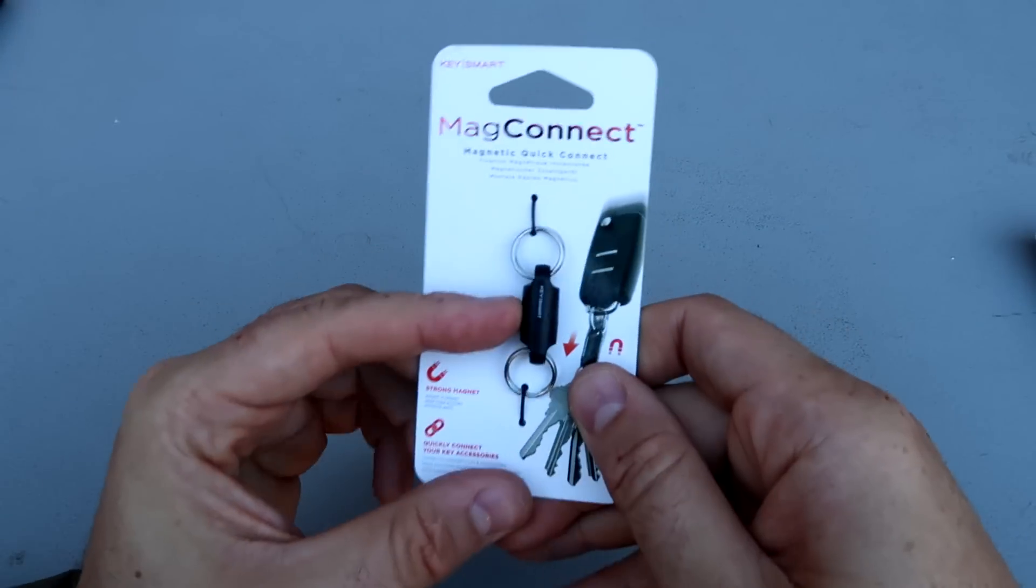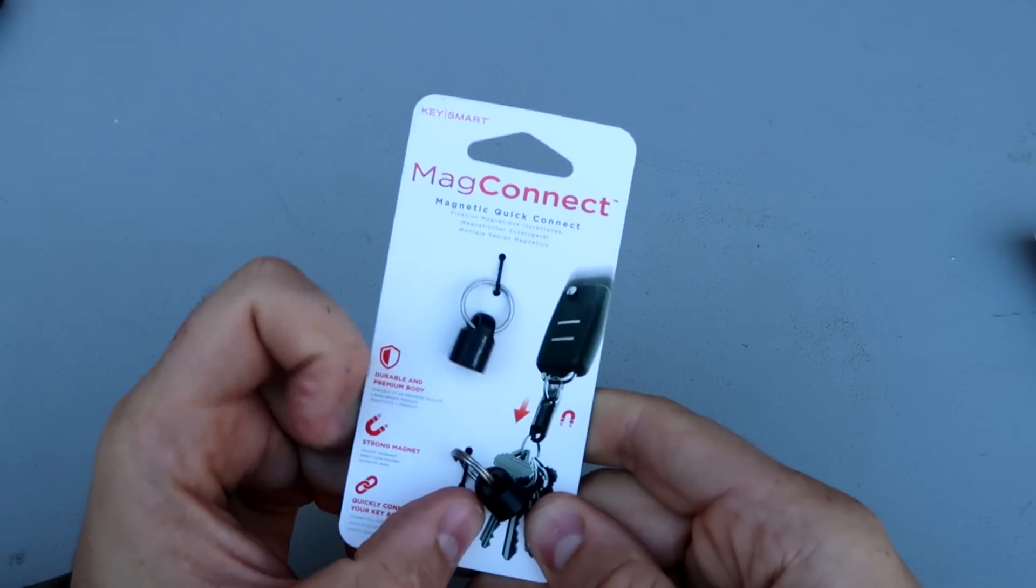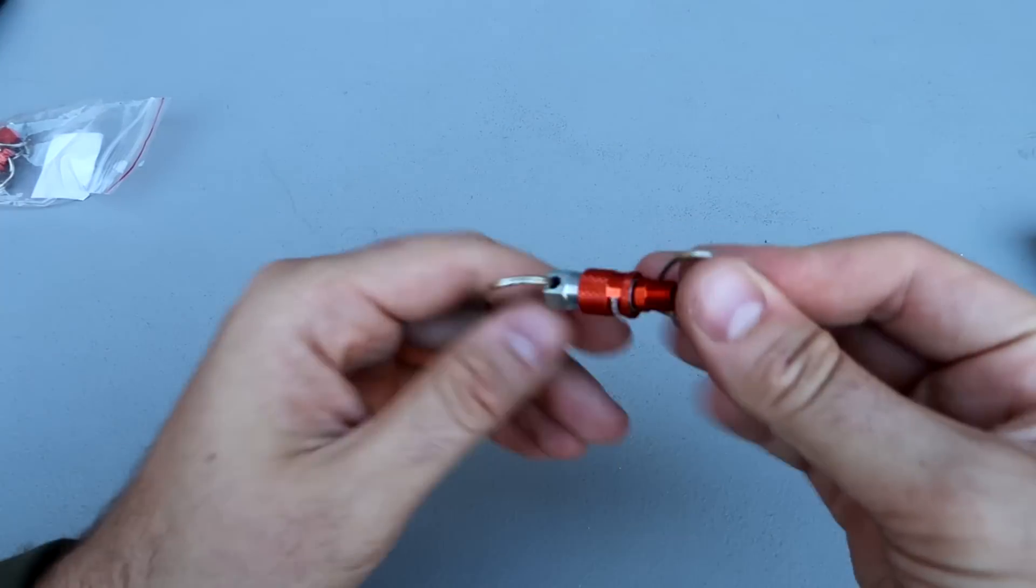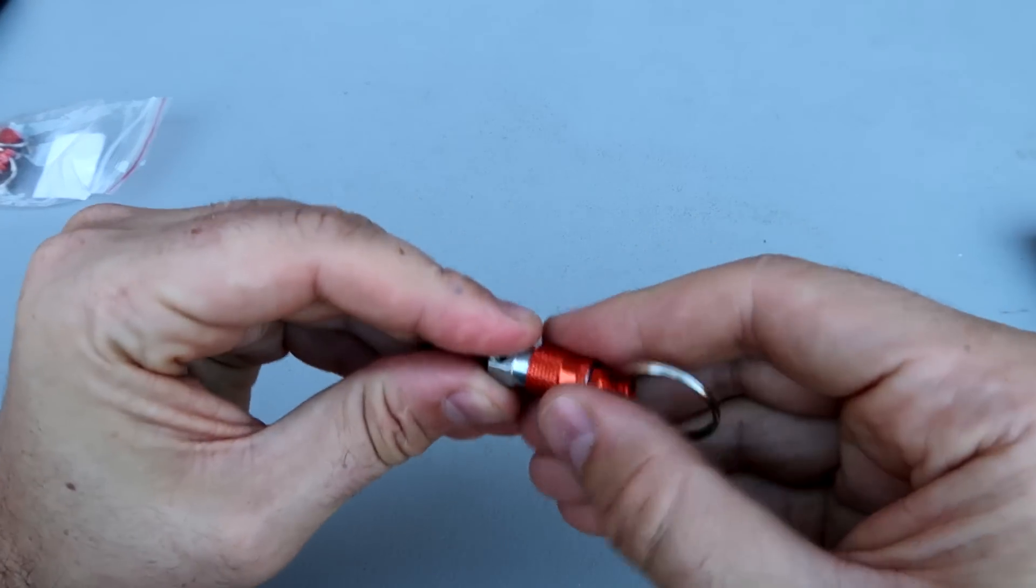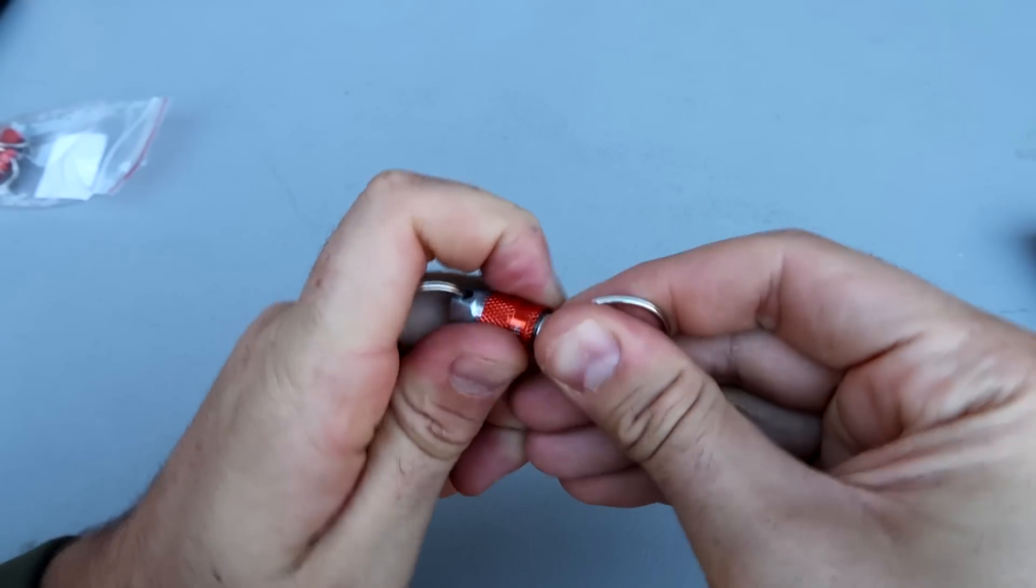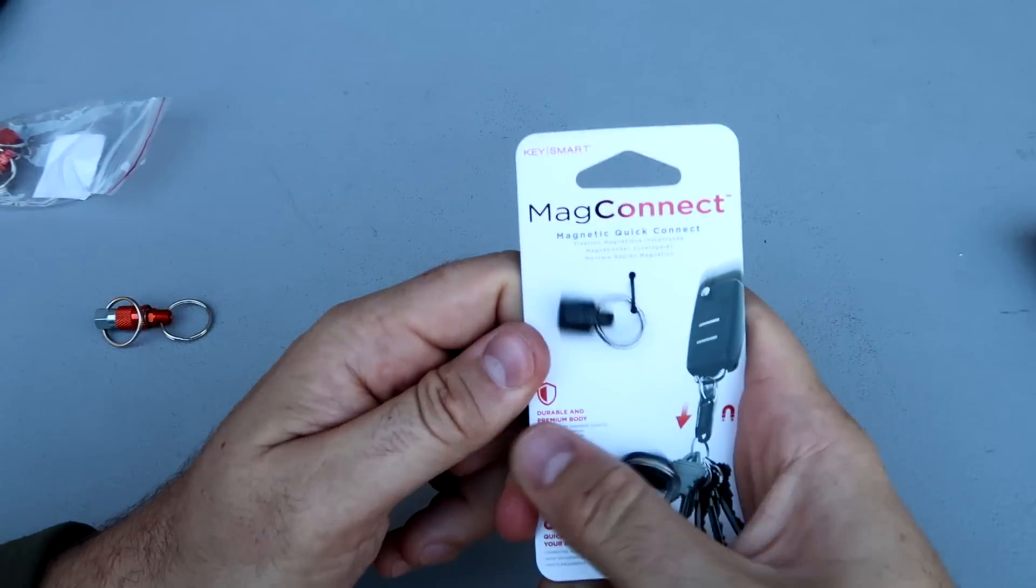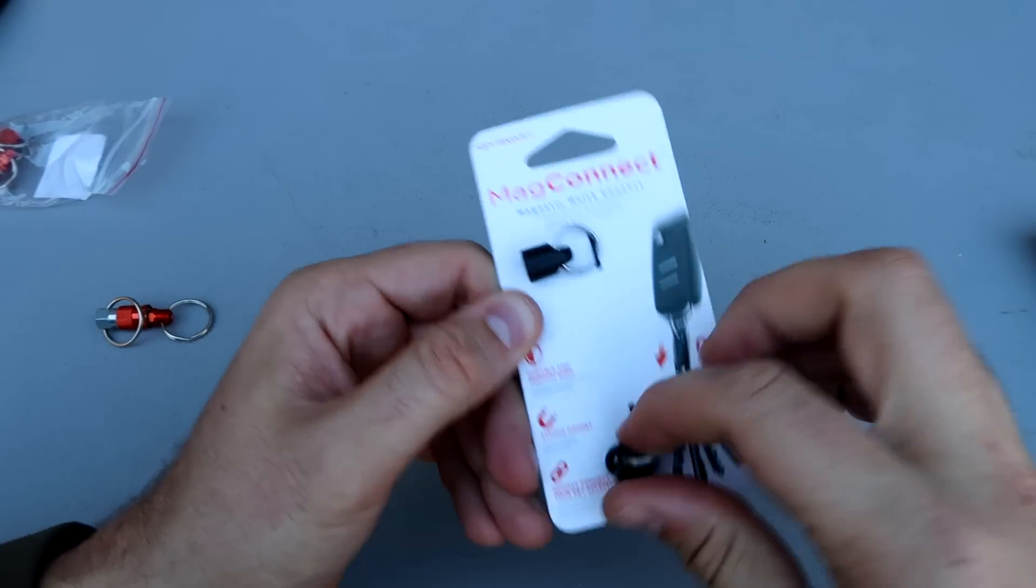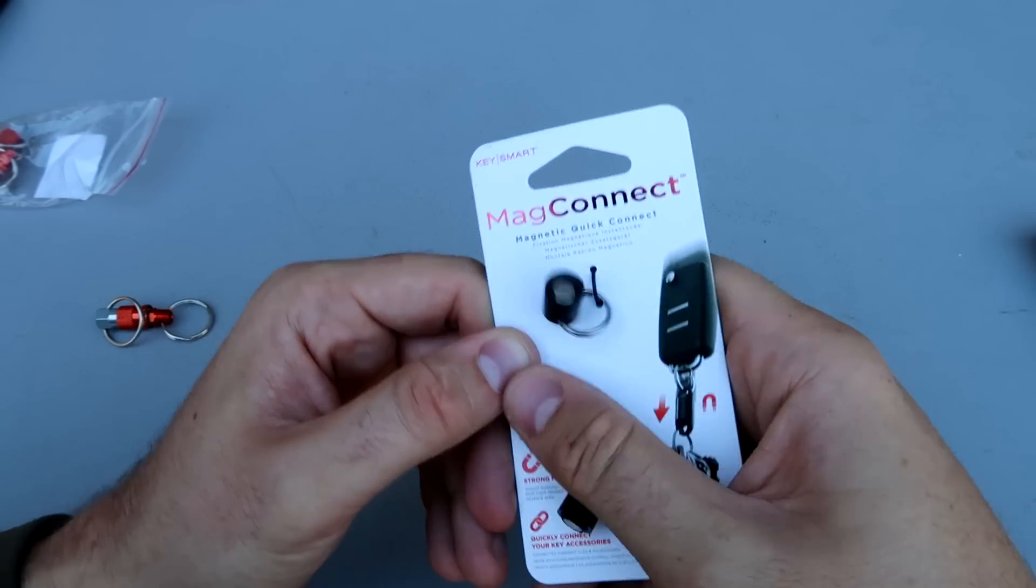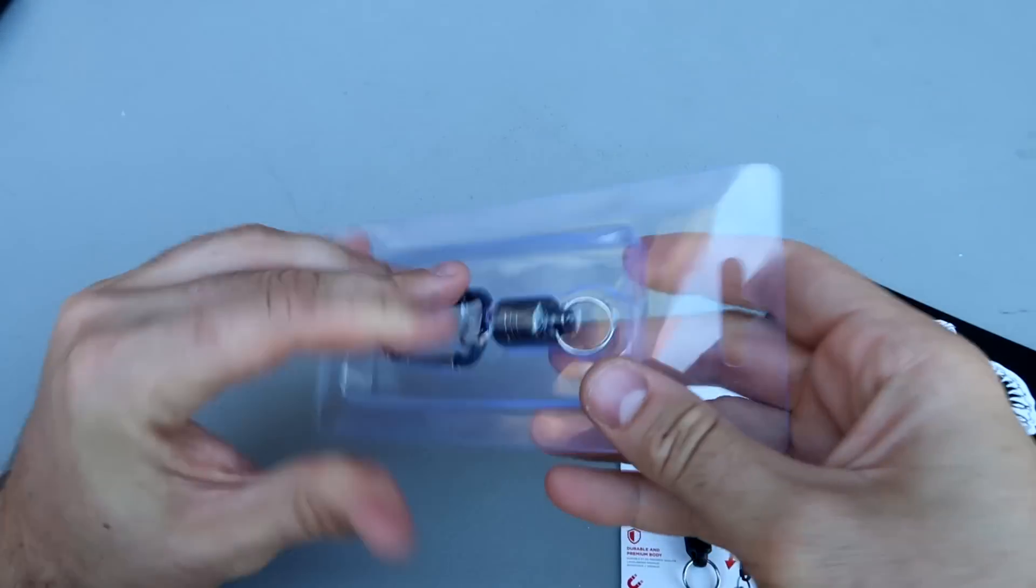Then you have right here mag connect quick release from the keys. That's kinda cool. And if you don't like magnets, you can buy this quick release. You just pull on that and it comes out and it's easy to put it back in. Just lift it and put it back in. Versus this right here, you can pull it off pretty easily. So I would be afraid of losing it.